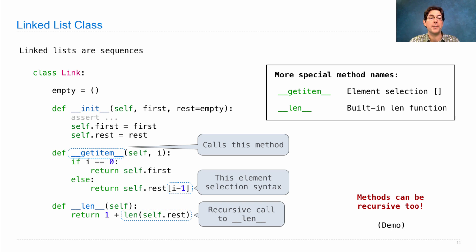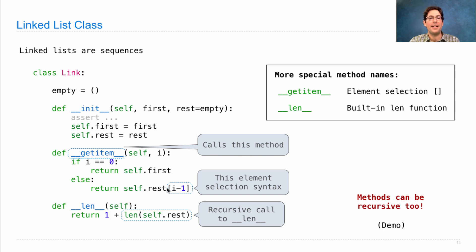Methods can be recursive too. These are both recursive methods — they're both implicitly recursive because we're using element selection syntax and the built-in len function. But all those do is make recursive calls right back to the method in which they're written.